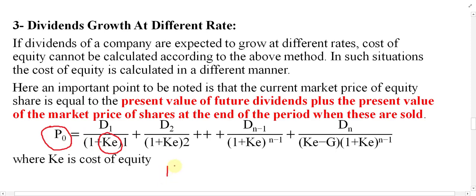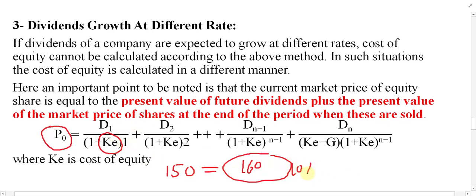If the left side of the equation equals, for example, 150, then the right side must also equal 150. We need to substitute a value for Ke to equalize both sides. For example, if we put in 10 percent and the right side calculates to 160 — which is more than 150 — then we need to increase the rate, say to 10.5 percent or higher.